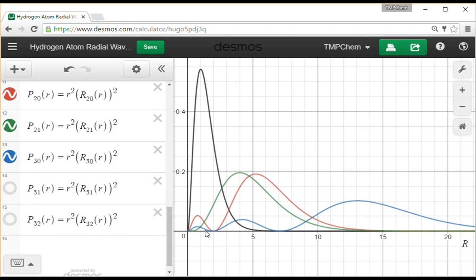For 3s, we have two radial nodes, getting bigger in density as we go further out. For 3p, we have one radial node. Again, its maximum is located just inside the maximum for 3s.